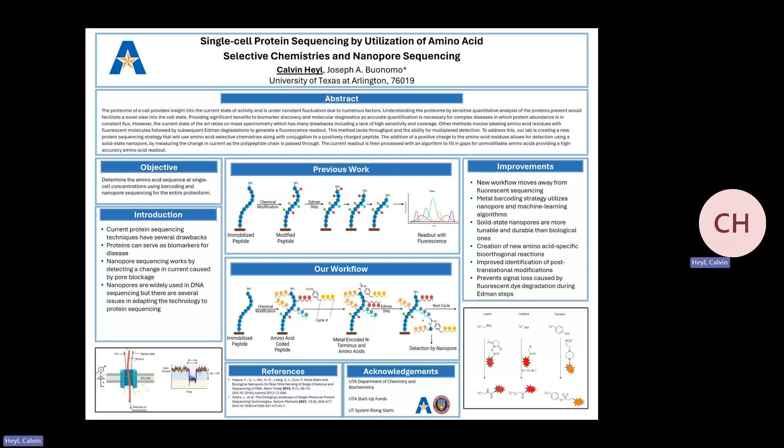The overall objective of this work is to determine the amino acid sequence at a single-cell concentration using barcoding and nanopore sequencing to map the entire proteome of a cell. We want to look at what proteins are inside of a cell as well as their relative concentrations to each other, and we need to be able to sequence these proteins individually. The issue is current protein sequencing techniques have several drawbacks — with mass spec, the concentration of the cell is too low to be detected.